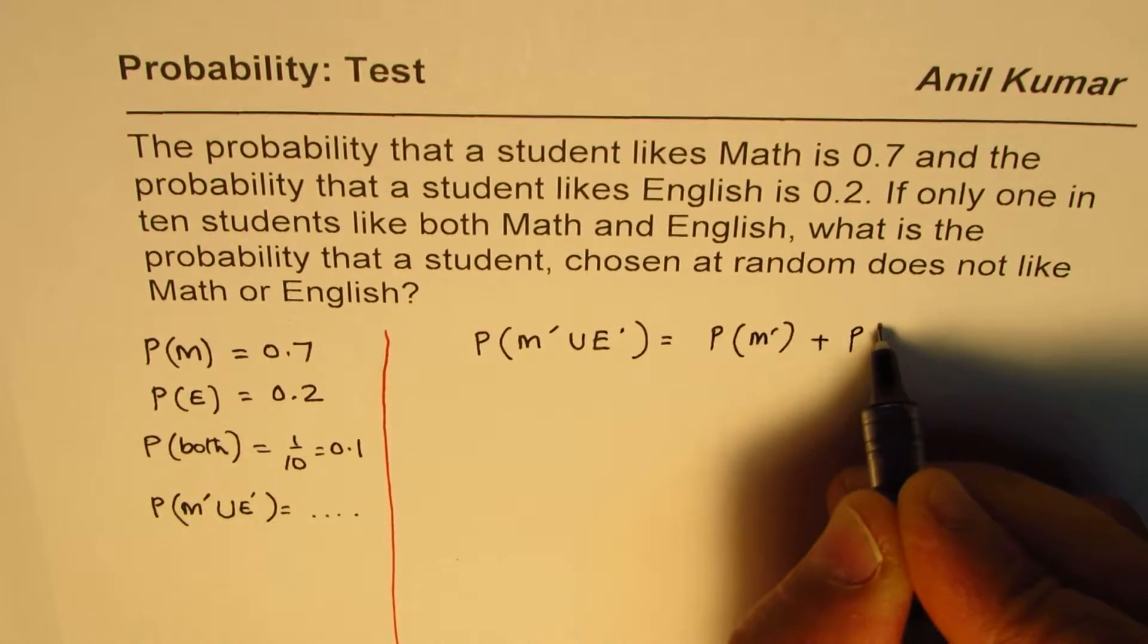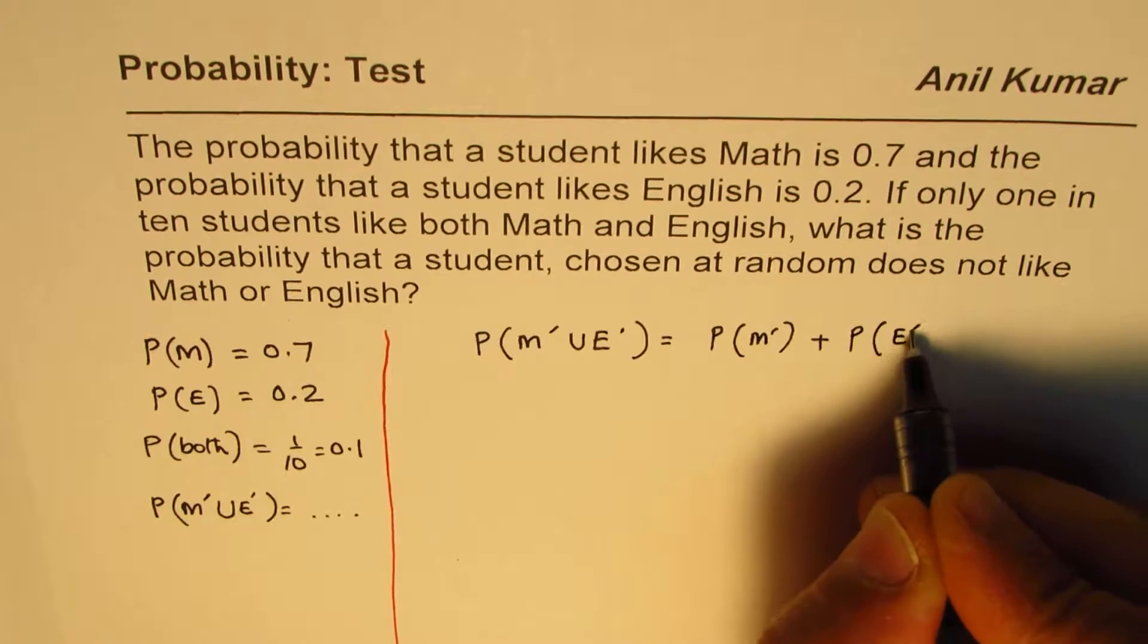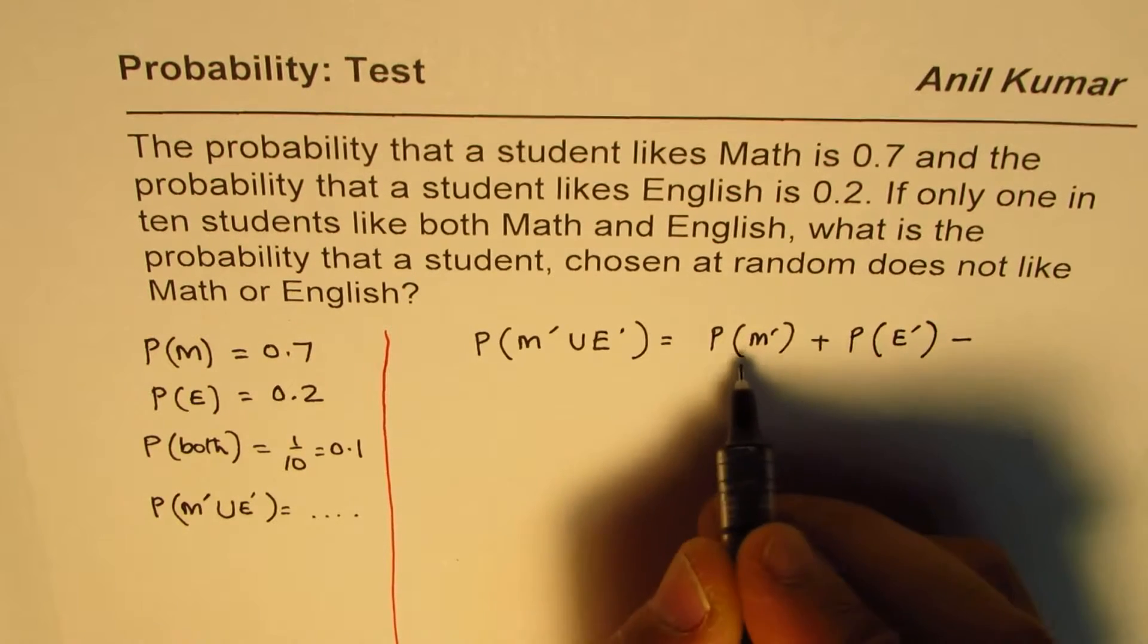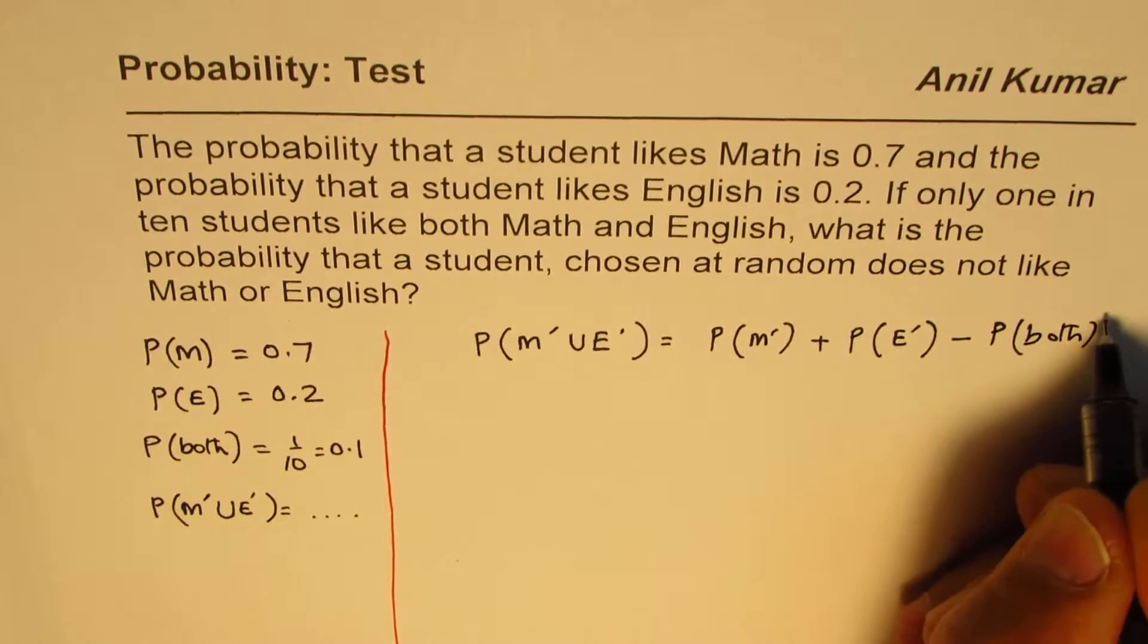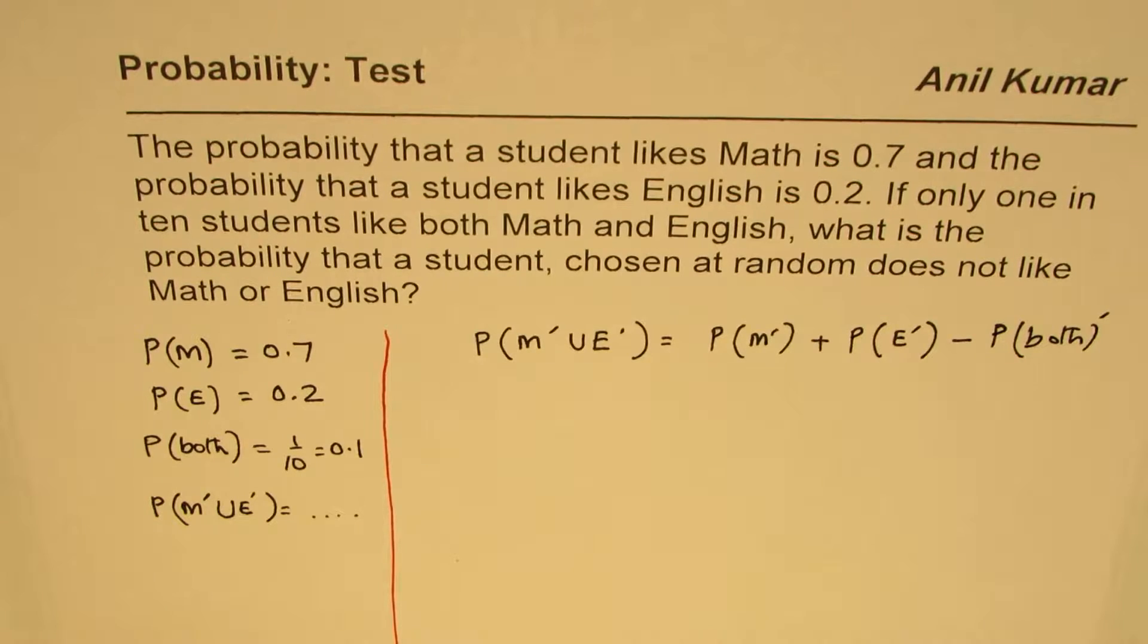Probability that a student does not like both will be equal to sum of those who don't like math plus probability for those who do not like English take away when we count them together twice, right? So we have to take away once that is both reciprocal.